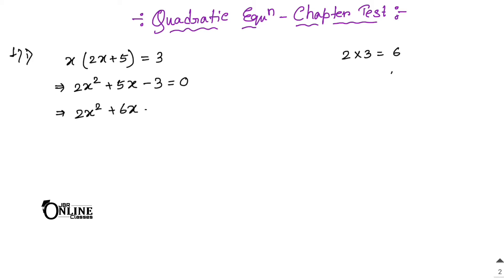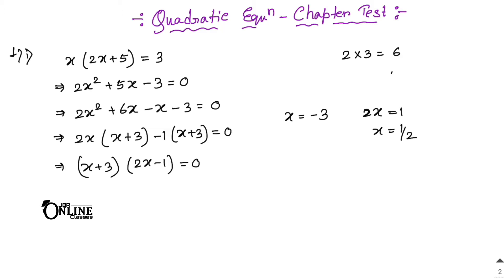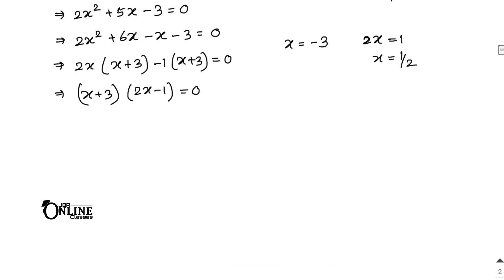Write this as 2x² + 6x - x - 3 = 0. Taking 2x common gives (x + 3), and taking -1 common also gives (x + 3). So (x + 3)(2x - 1) = 0. Therefore x = -3 or 2x = 1, giving x = 1/2.